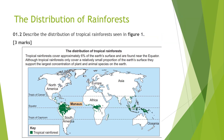For the second question you're going to need to write an answer. Describe the distribution of tropical rainforests seen in figure one. It's worth three marks, so pause the video, give yourself three minutes to answer, and then we'll see how you got on.